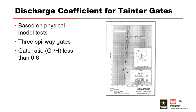The published discharge coefficients in Engineering Manual 1110-2-1603 were generally developed from physical model studies with three or more spillway gates in operation. Discharge coefficients for a single gate would be a bit lower because of pier contractions. The coefficients are reasonably accurate for gate opening ratios less than about 0.6, and calculated discharge estimates will be less accurate outside of these parameters.